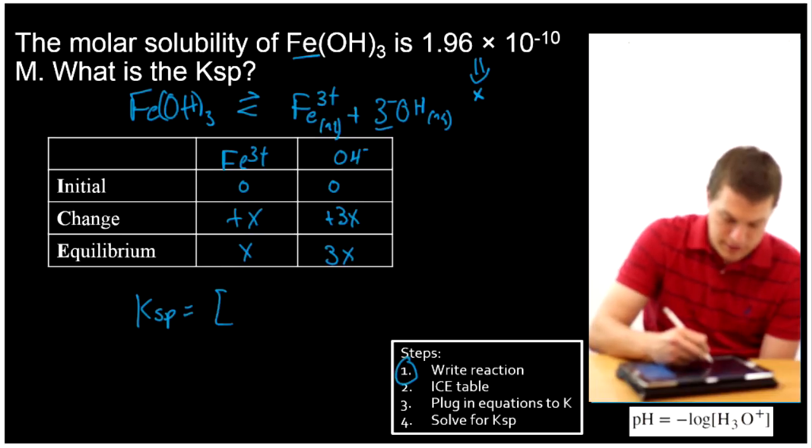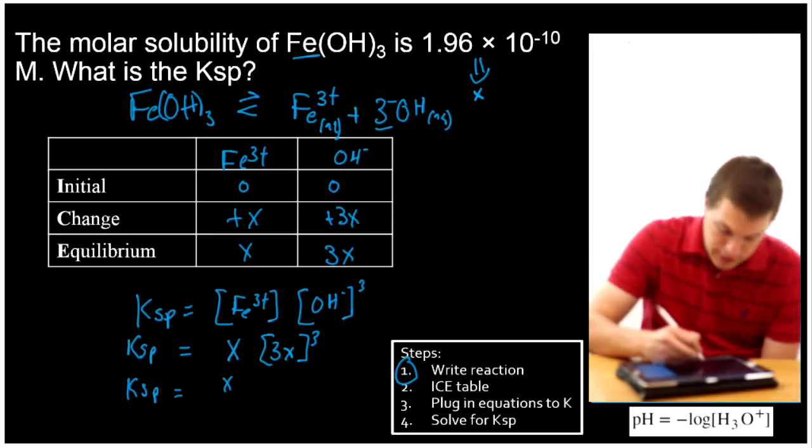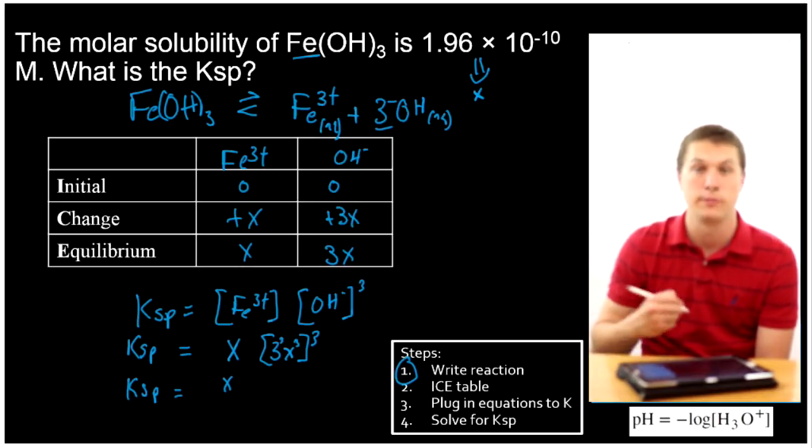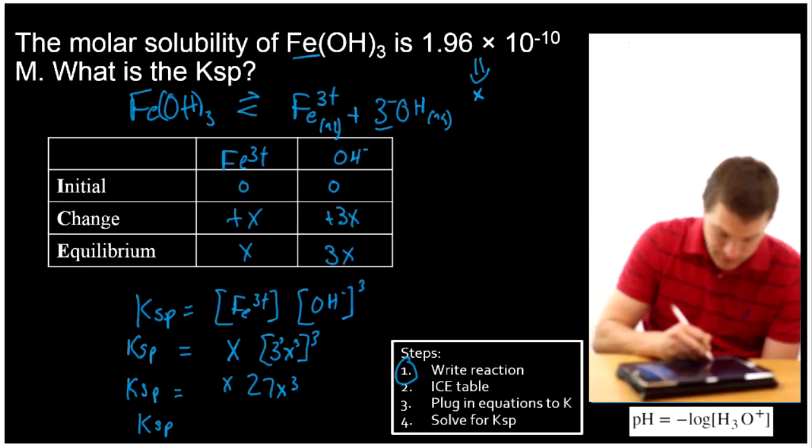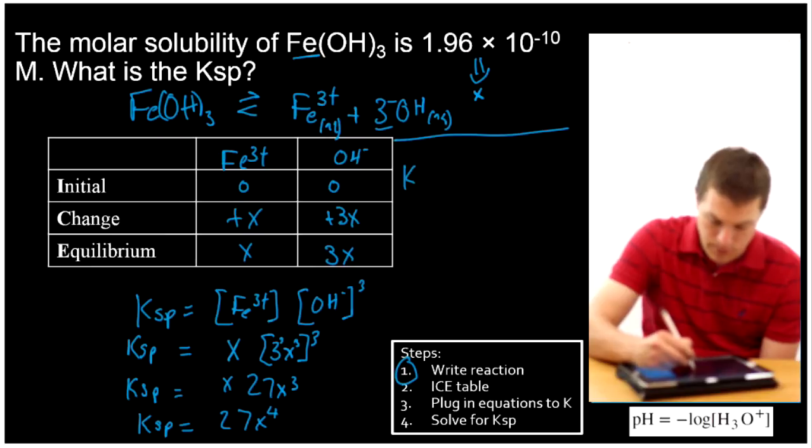So I want to solve for my KSP, and my KSP is going to be iron plus concentration times my hydroxide concentration cubed. So KSP then is equal to X times 3X cubed. So let's keep going with that, and we get KSP is equal to X. What's 3X cubed? Well remember, I have to cube both things here. So I'm going to cube my X and my 3. 3 cubed is 3 times 3, which is 9, times 3, which is 27. So I get X, 27X cubed, so KSP then is equal to 27X to the fourth.